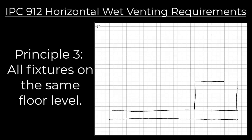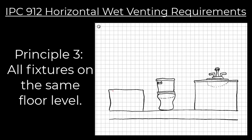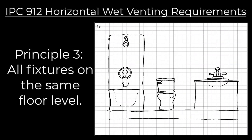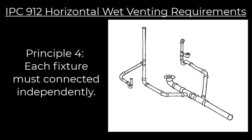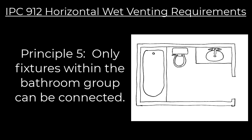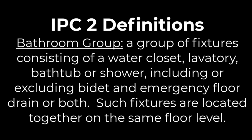Horizontal wet vent principle three: all fixtures connected to the wet vent must be on the same floor level — same as with vertical wet vent. Principle four: each fixture must connect independently to the wet vent. Principle five: only fixtures within the bathroom group are allowed to be connected to the wet vent.